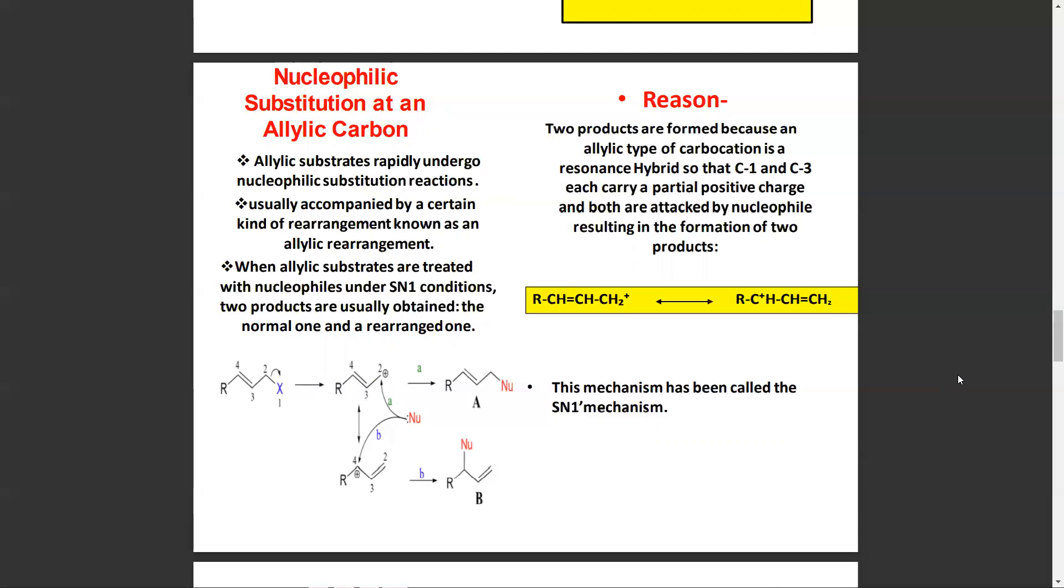The reason two products are formed is because an allylic type of carbocation is a resonance hybrid, so that C1 and C3 each carry a partial positive charge and both are attacked by the nucleophile, resulting in the formation of two products. This mechanism has been called the SN1 prime mechanism.